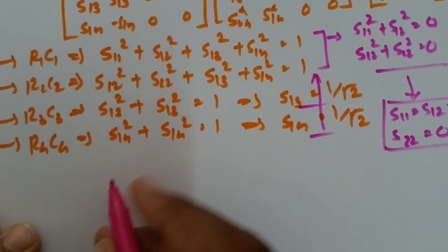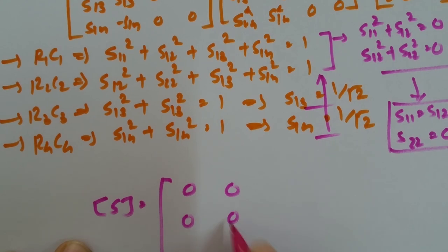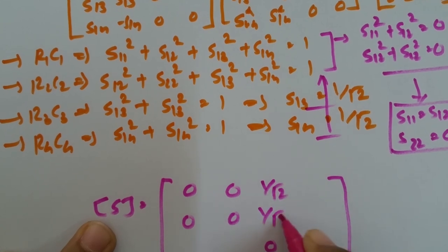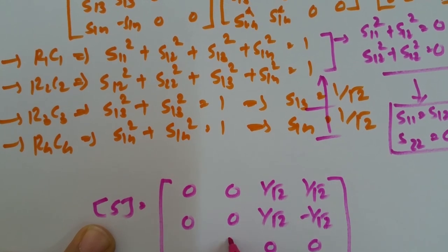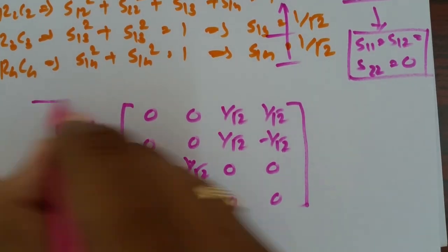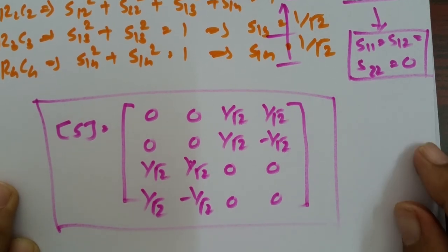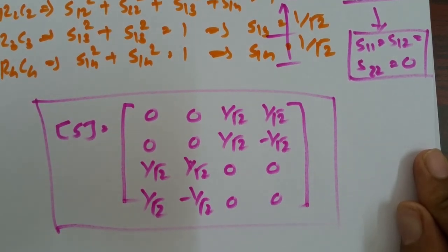From this we can identify the MAGIC-T scattering matrix. The diagonal elements S11, S22, S33, S44 are all 0, S12 = S21 = 0, S34 = S43 = 0. The non-zero elements are S13 = S23 = S31 = S32 = 1/√2 (H-ARM coupling) and S14 = −S24 = S41 = −S42 = 1/√2 (E-ARM coupling with phase reversal). That is how MAGIC-T functions and this is its scattering matrix.